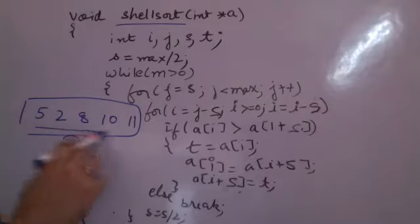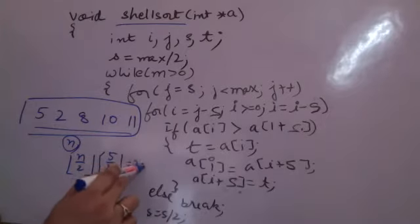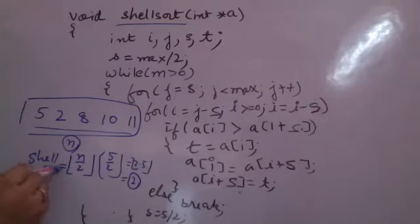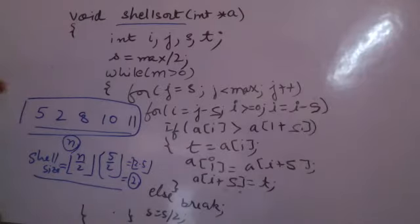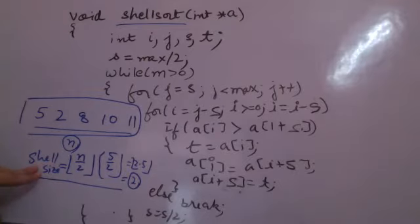If you are seeing that there are 5 elements, so 5 by 2 floor value will be? This is 2 and a half, so floor value will be 2. So shell size — this is only telling me the shell size. What do you mean by shell size? We will just understand. So 2 is what we have found. Now what we do? These are the elements. Shell size is 2. How do we perform shell sort? We are comparing the elements which are at a gap of this particular shell size.